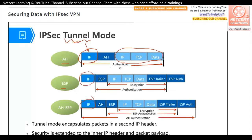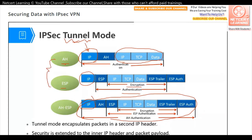In tunnel mode, we can still use AH for authentication only, or ESP for encryption and authentication, or both together — encrypting the data while authenticating the whole package. In summary, we have two encapsulation modes: tunnel and transport, and two security protocols: AH and ESP. Normally we always use ESP, because AH cannot do encryption, making the data less secure.